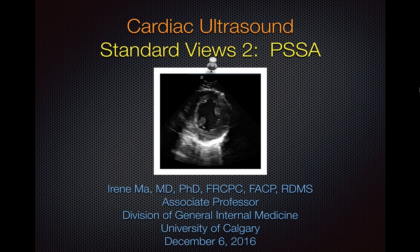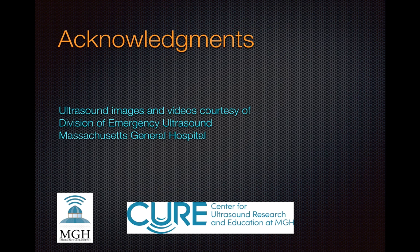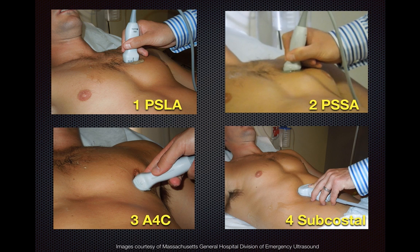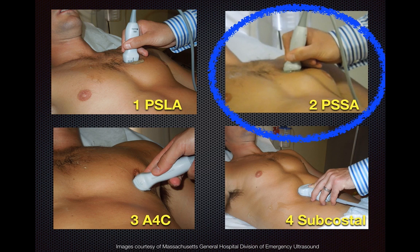This is the second of four installments on the cardiac ultrasound standard views, and we're covering the parasternal short axis today. Thanks to the Division of Emergency Ultrasound at the Massachusetts General Hospital for some of the ultrasound images and videos. In our last module we covered parasternal long axis, and today we're covering the parasternal short axis, which is the second view.